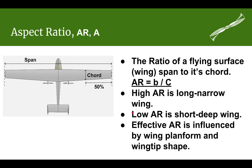Conversely, a low aspect ratio is going to be a short deep wing — you'll have a smaller B and a larger C. A low aspect ratio would be roughly half this wing, about 50% of this area. Not extremely low, but fairly low.